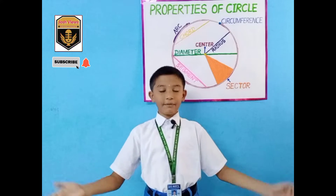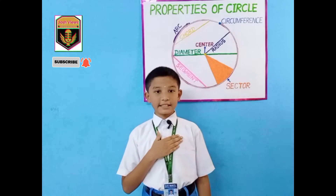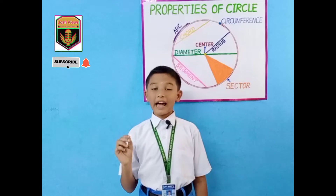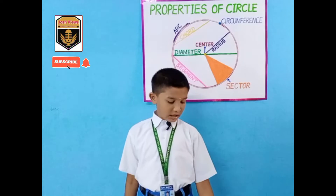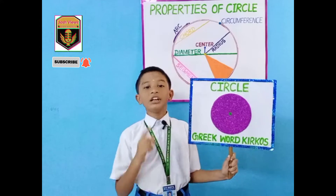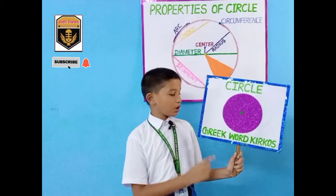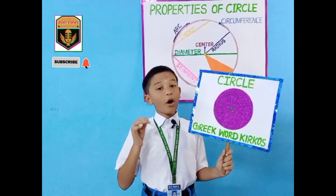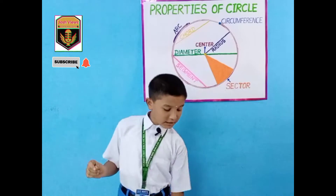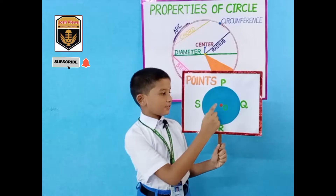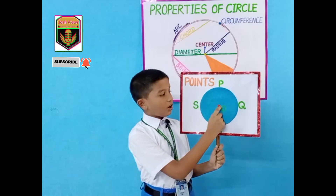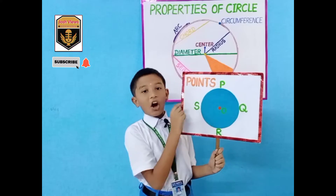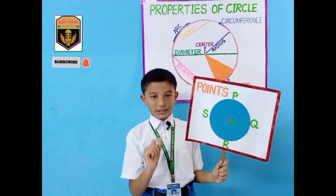Good morning to everyone. My name is S. Joshua. My topic is circle and its properties and uses. The word circle is derived from the Greek word 'tricose' that means hoop or ring. Every point of the circle is at equal distance from the center. O is the center of the circle, and PQRS are the points on the circle.